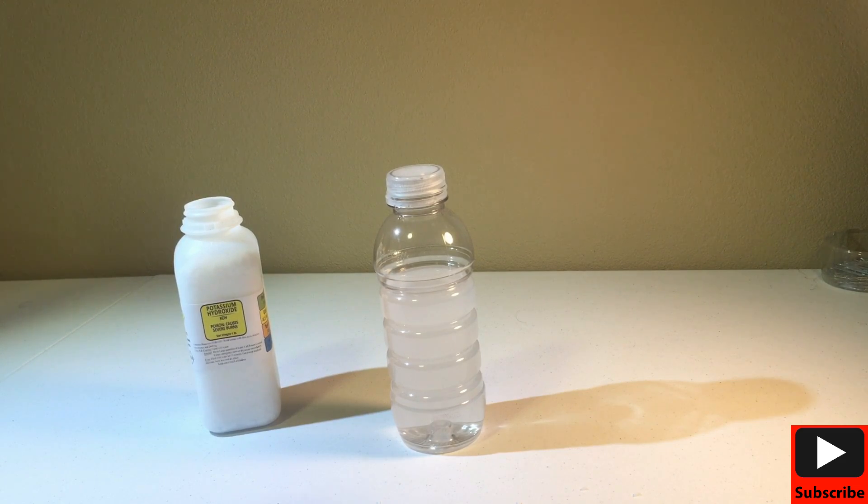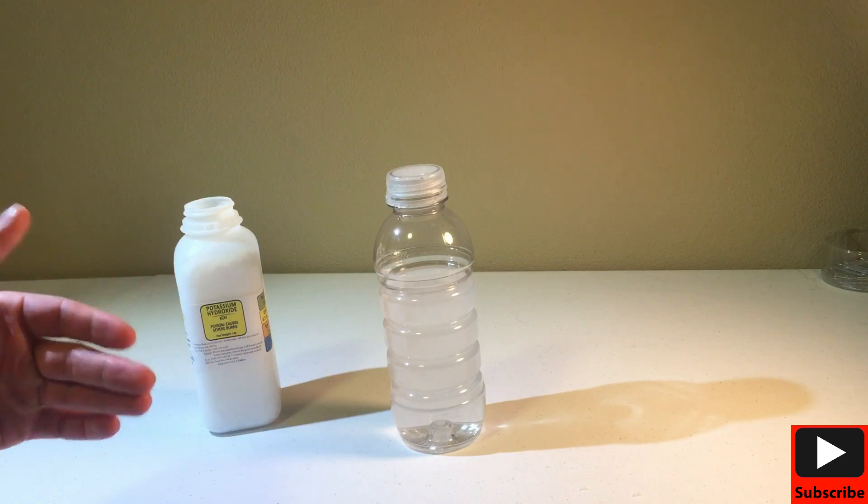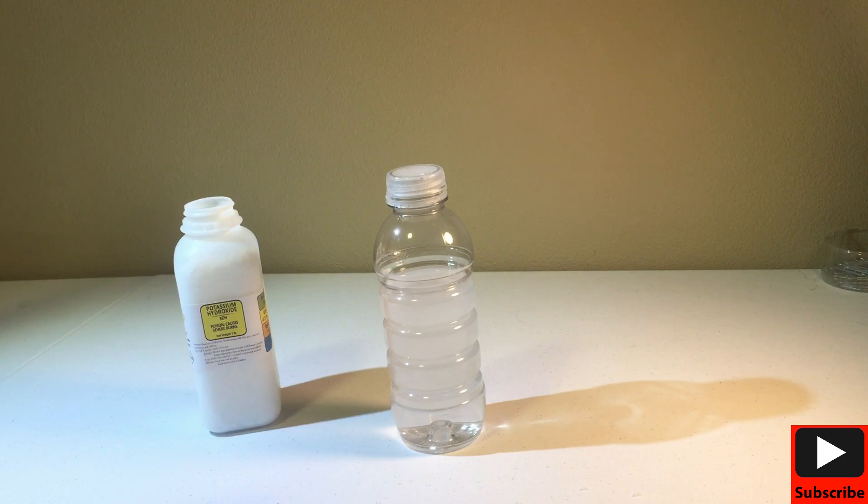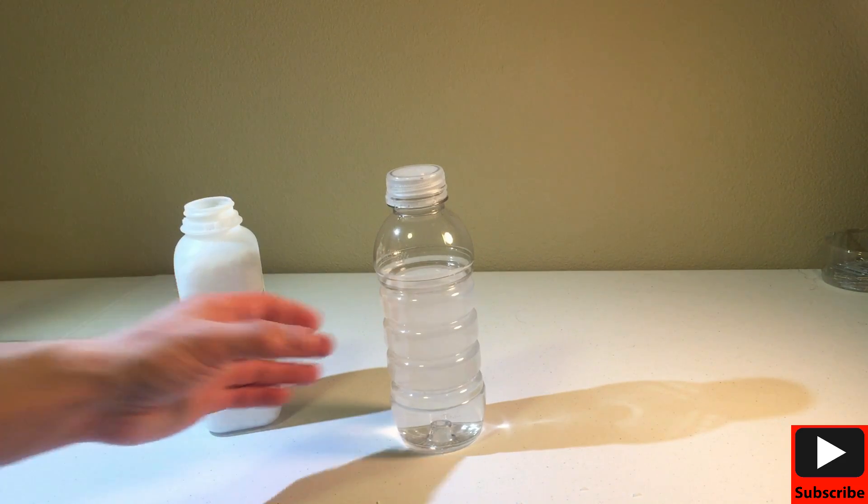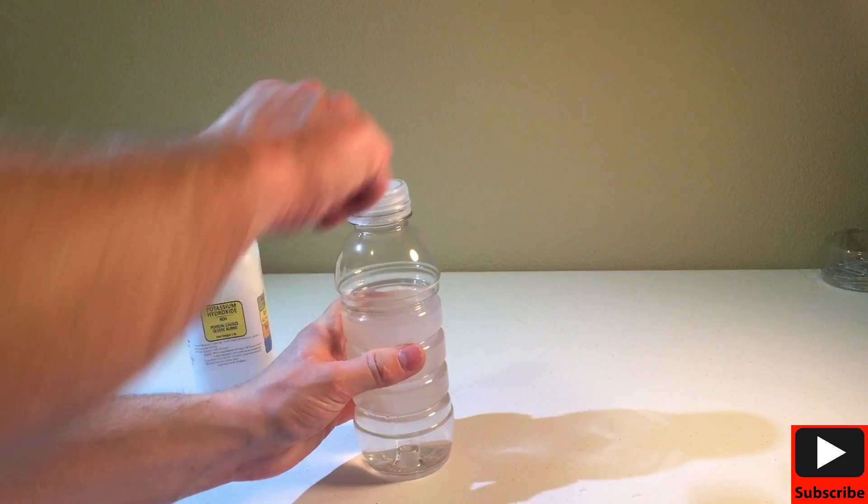Every time you use potassium hydroxide, wash your hands about three to five times, about 20 seconds each time. You want to make sure your hands really are clean and safe.